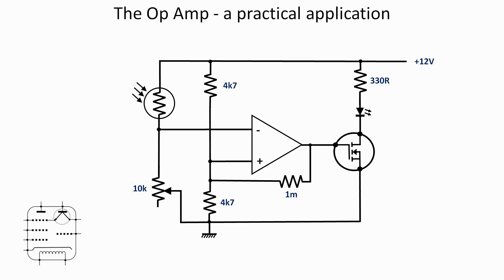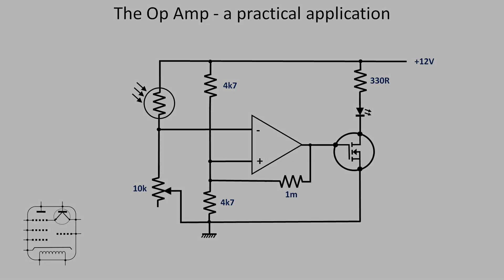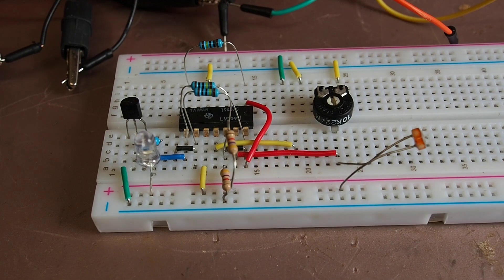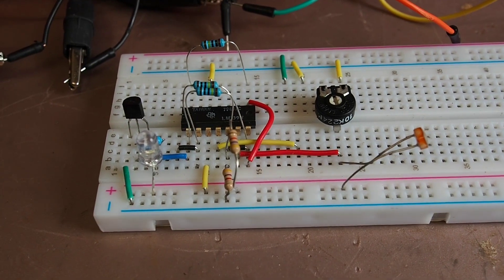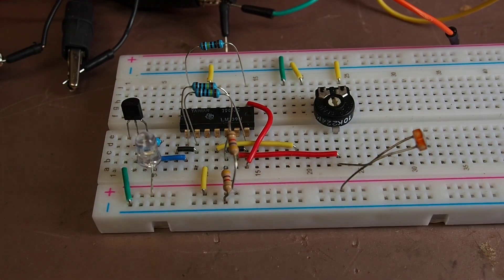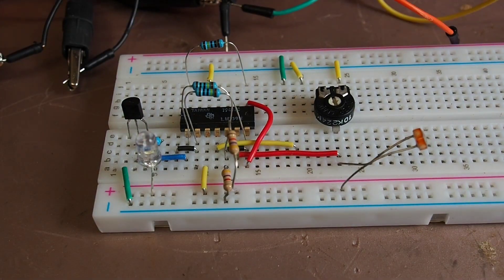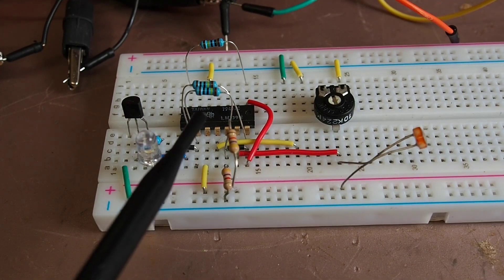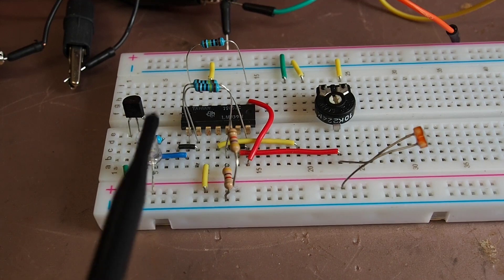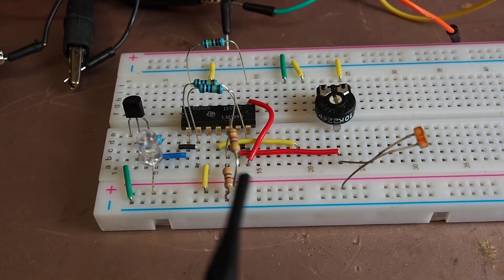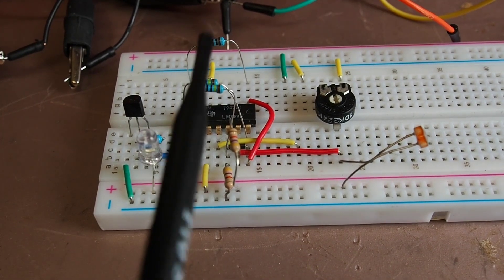So let's go and have a look on the breadboard how that circuit looks and what it does. Here we are back looking at the breadboard again for a practical demonstration of how to use an op amp. Here we've got the quad op amp—I'm just using one of them. Here is the voltage divider and the one megaohm resistor, which provides the positive feedback.